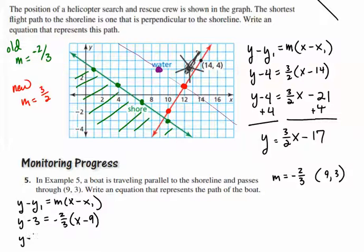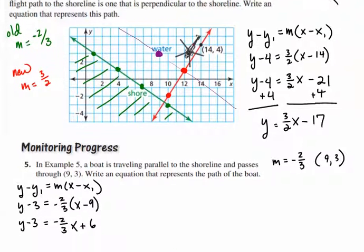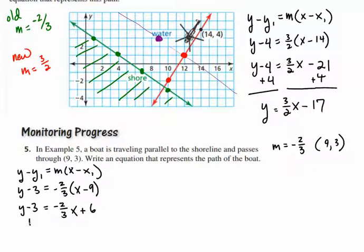So, y minus 3 is equal to negative 2 thirds x. Negative 2 thirds times negative 9 is positive 18 over 3, or positive 6. We need to add 3 to both sides, and we end up with y is equal to negative 2 thirds x plus 9.